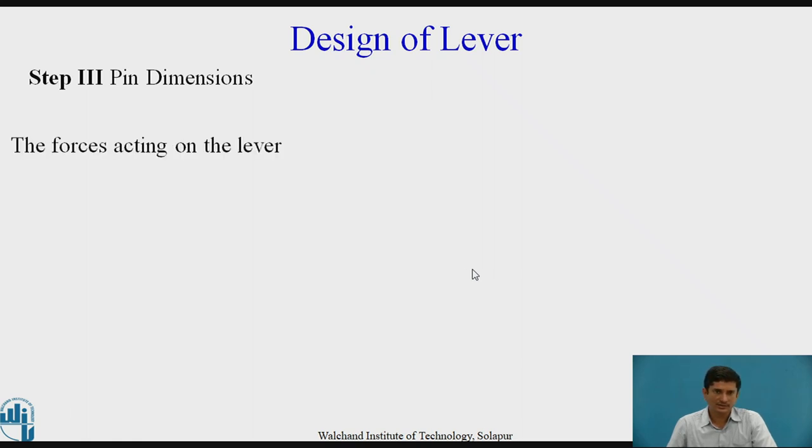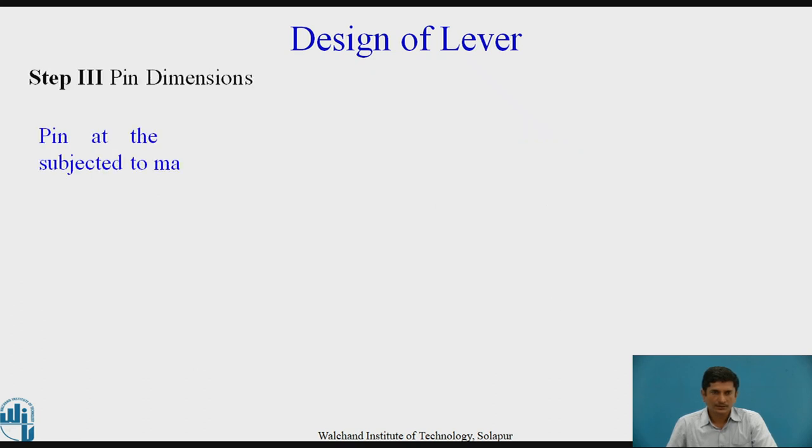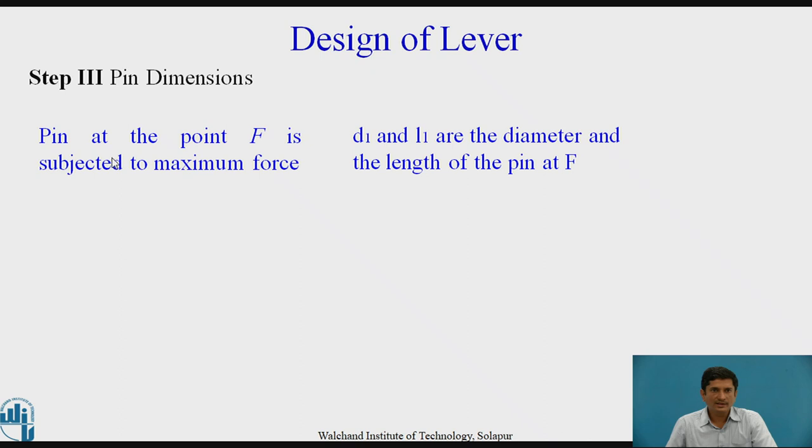The next part is the pin dimension. The forces acting on the lever, we know that these are the three forces R, F and P. These are to be used to calculate the pin dimensions. Force F is 2945, force P is around 294 and force R is around 2650 N. It is clear that the pin at the point F is subjected to the maximum force. D1 and L1 are the diameter and the length of the pin at F. We need to assume that L1 equals D1.